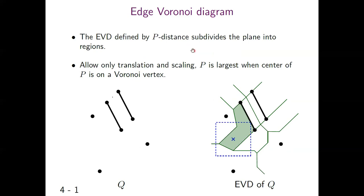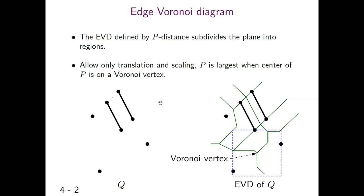From now on, I will abbreviate H-Voronoi diagram to EVD. The EVD subdivides the plane into regions as the right figure. Each site of Q corresponds to a region of EVD, and every scale centered in the region touches the corresponding site. For example, the blue scale centered in the green region touches the corresponding H-site. When we allow only translation and scaling, P can be the largest in Q when the P center is on the Voronoi vertex.